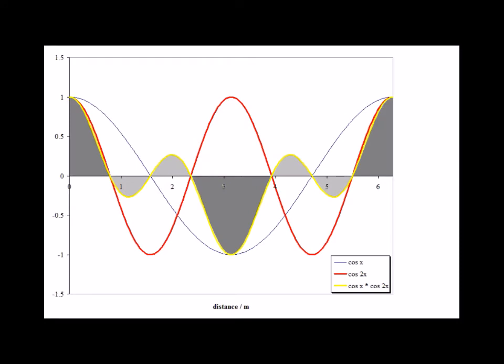The integral of psi two star psi one d-tau can be linked to the area under the curve, which is yellow in the graph. Areas above the x-axis are positive and areas below are negative. Note that the light gray regions, which are of exactly the same shape, have positive areas exactly counterbalanced by equal and opposite negative areas. Similarly, the two positive dark gray regions are exactly mirrored by the negative area below the x-axis in the center of the graph. Therefore, the integral is equal to 0.